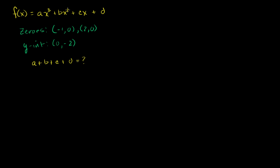The first thing is to think about what a third degree polynomial looks like, and what we even mean when we say zeros. Let me draw a little bit of a graph. Now a third degree polynomial can have as many as three zeros. Zeros are just the points where the function is equal to 0. So we have a zero at (-1, 0) and a zero at (2, 0) — those are the two zeros they've given us.